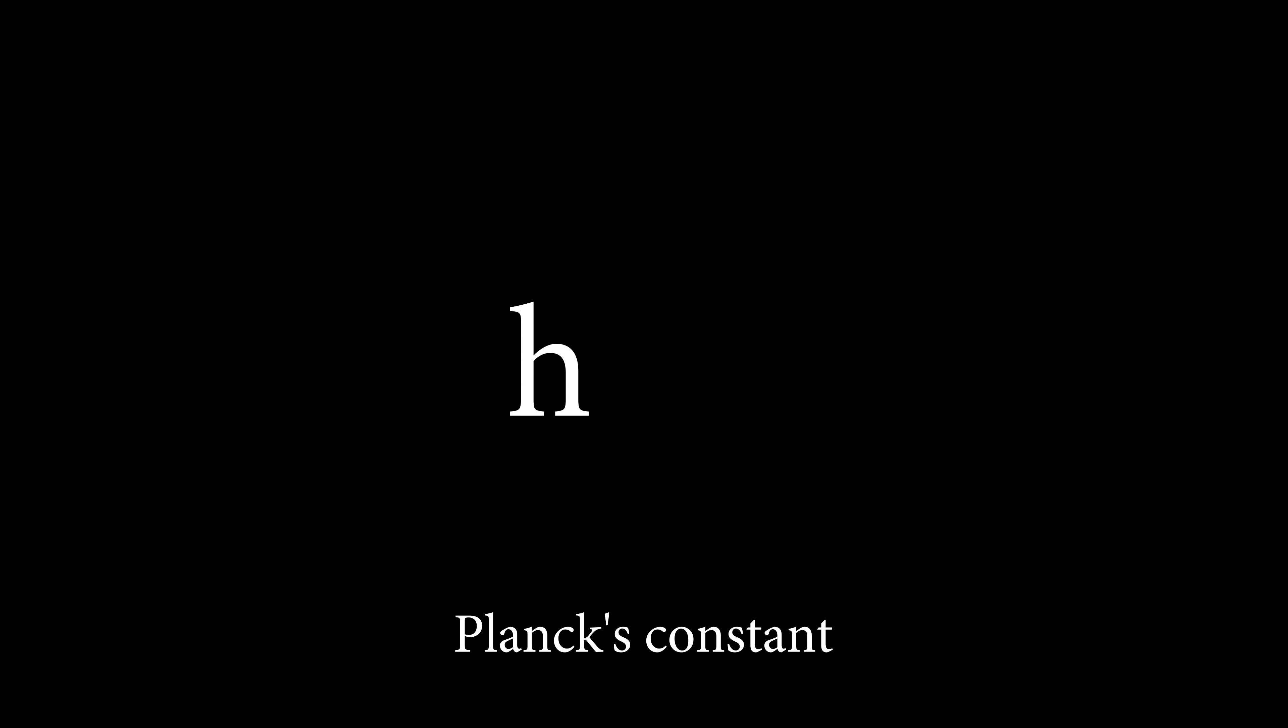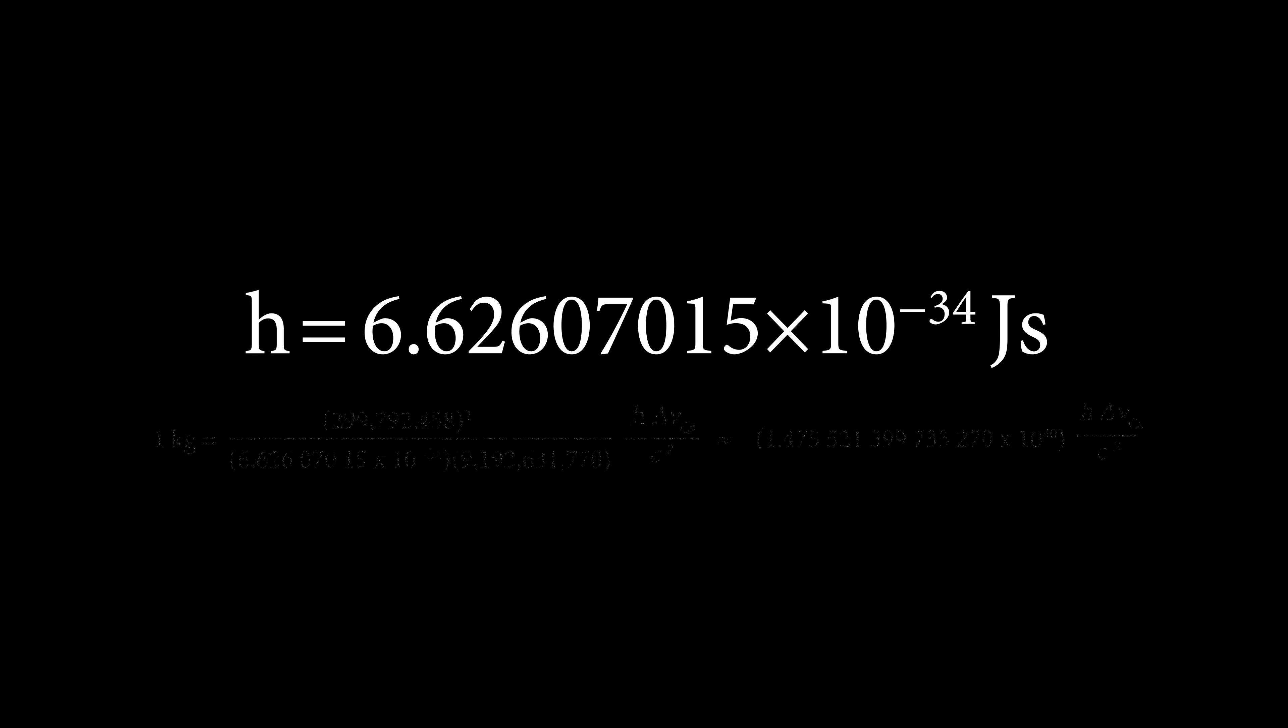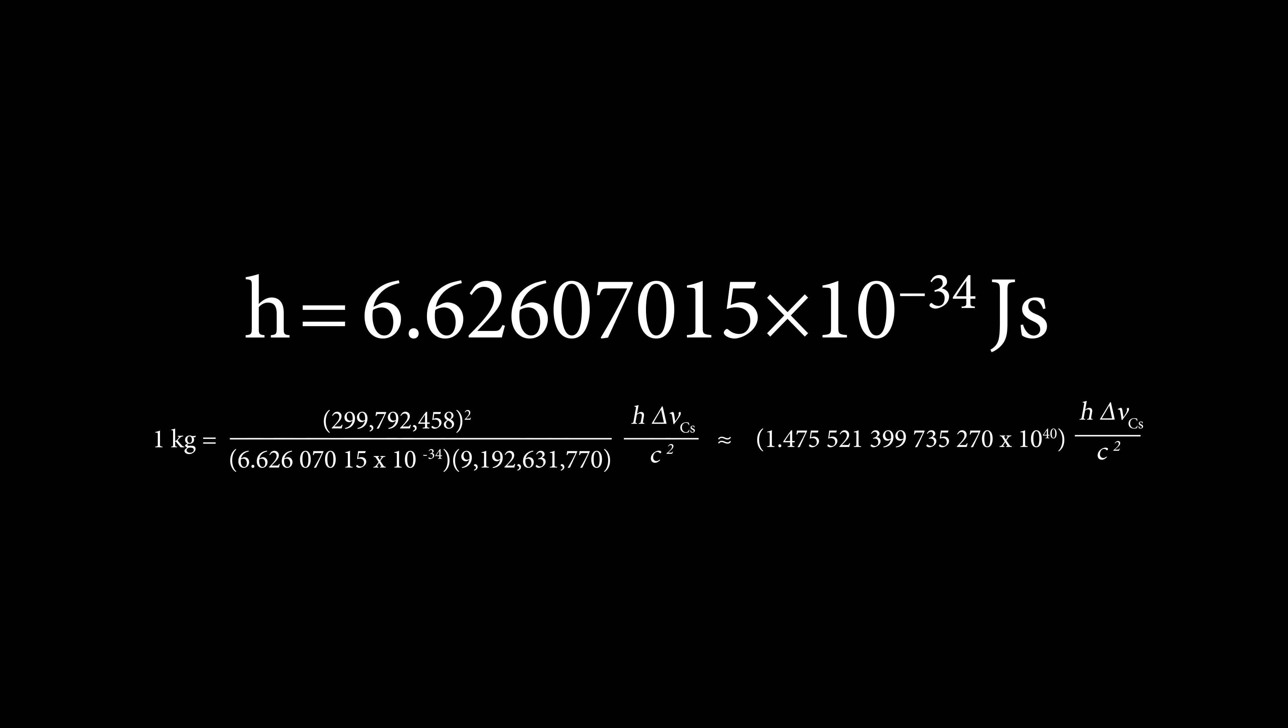So how does that work? Well, Planck's constant is best known for relating the frequency of a photon to its energy by E equals HF. But energy and mass are related through E equals mc squared. So you can see how mass is related to Planck's constant. In 2019, scientists officially set the value of Planck's constant to be this number in joule seconds, which along with the definition of the meter and the second, now defines what a kilogram is.